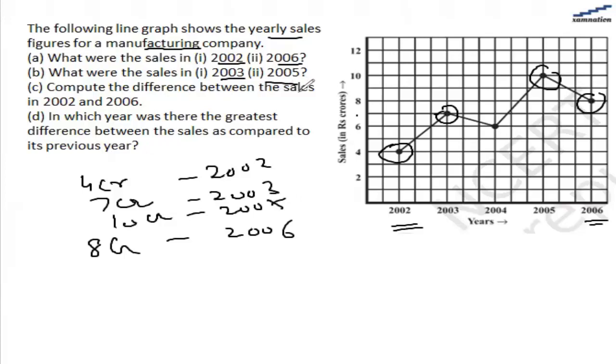Compute the difference between the sale in 2002 and 2006. So 2002 sale was 4 crore and 2006 sale was 8 crore, so the difference is 4 crore.